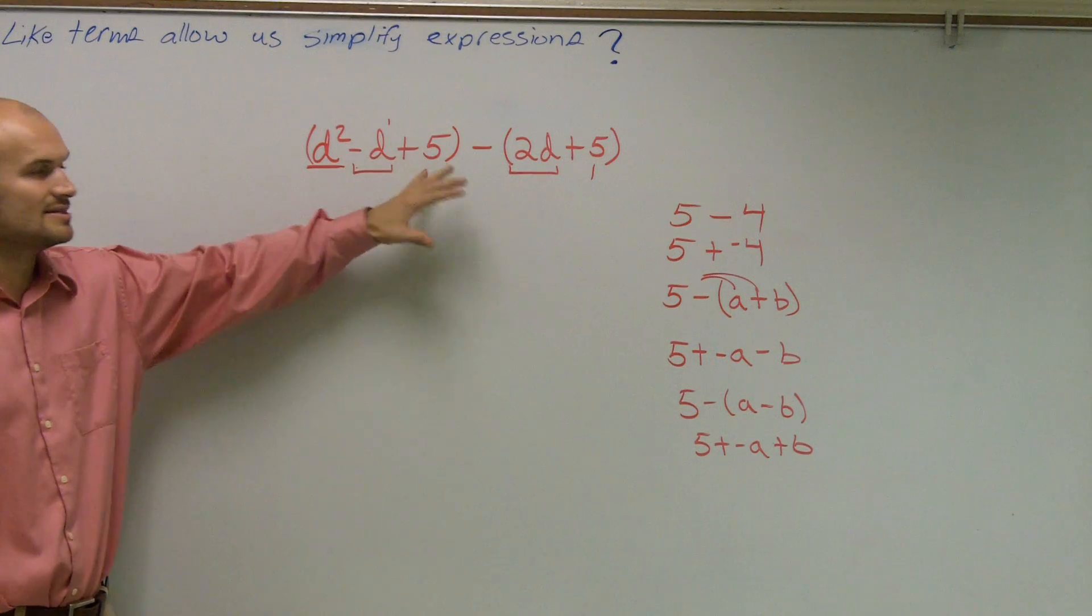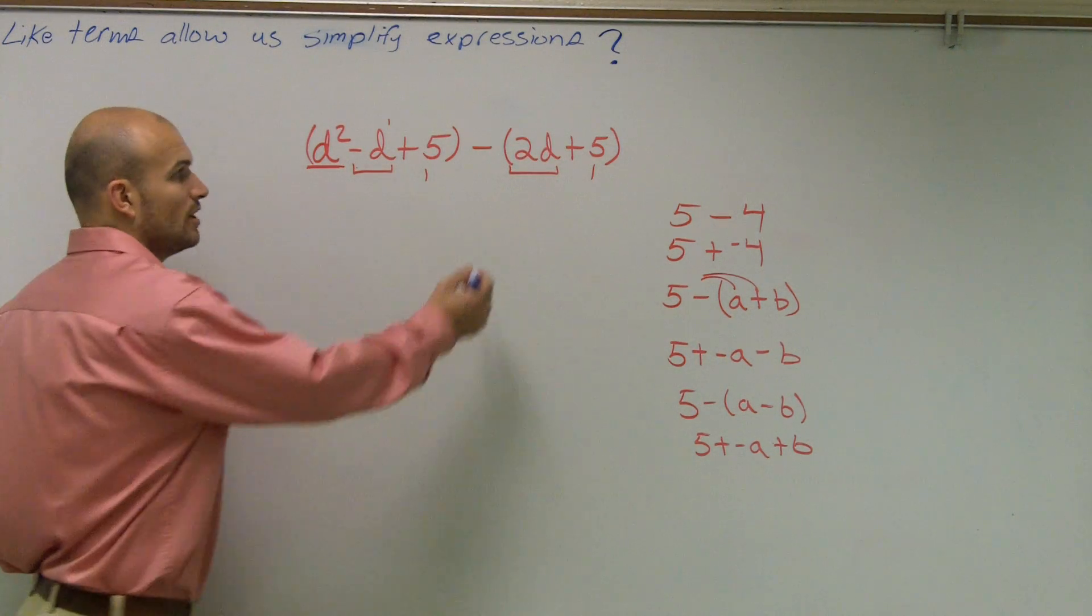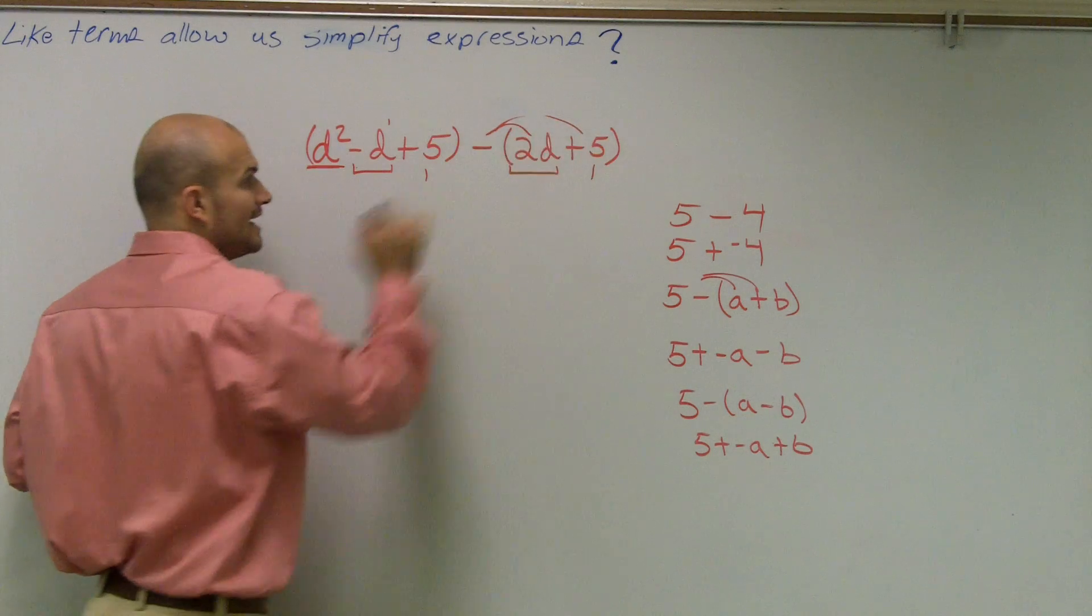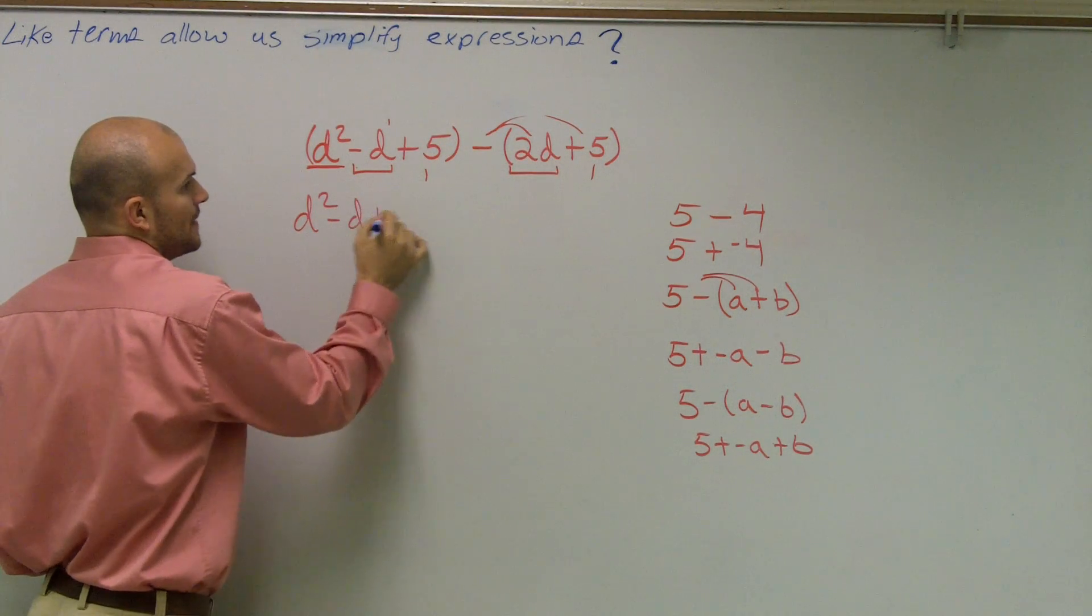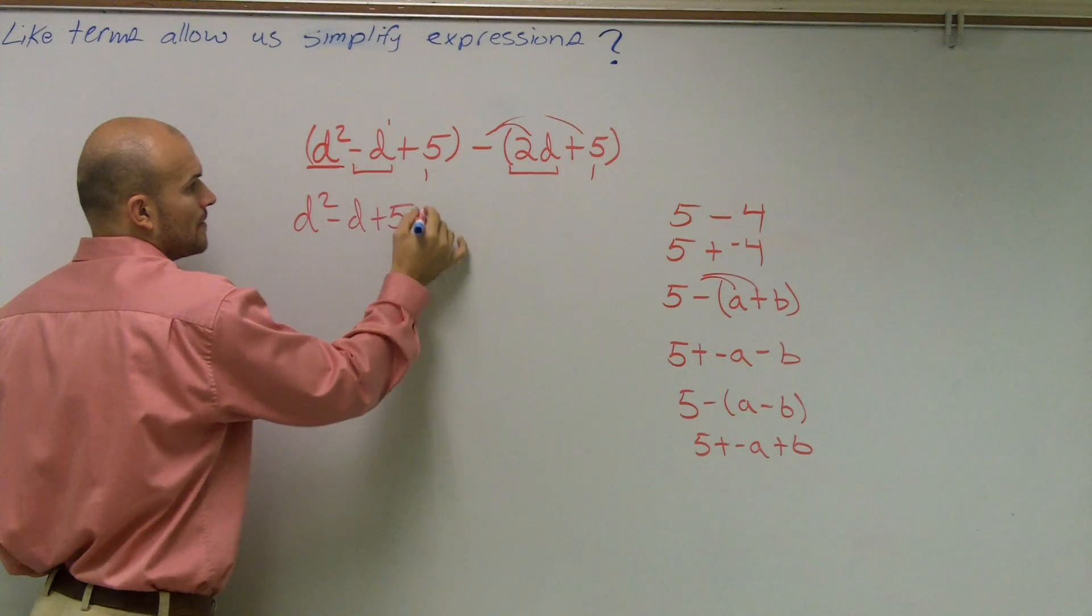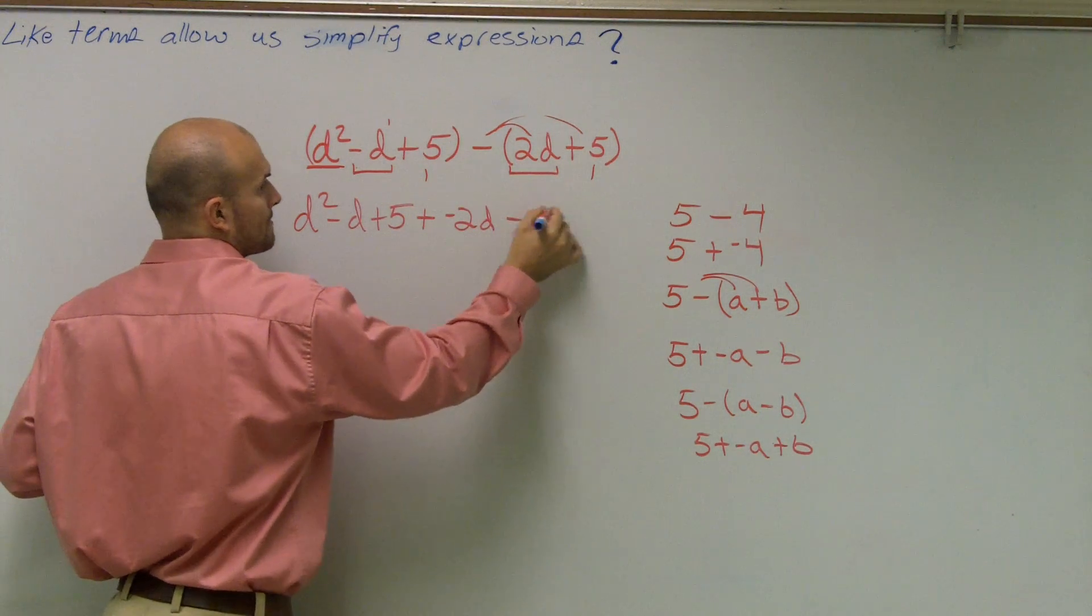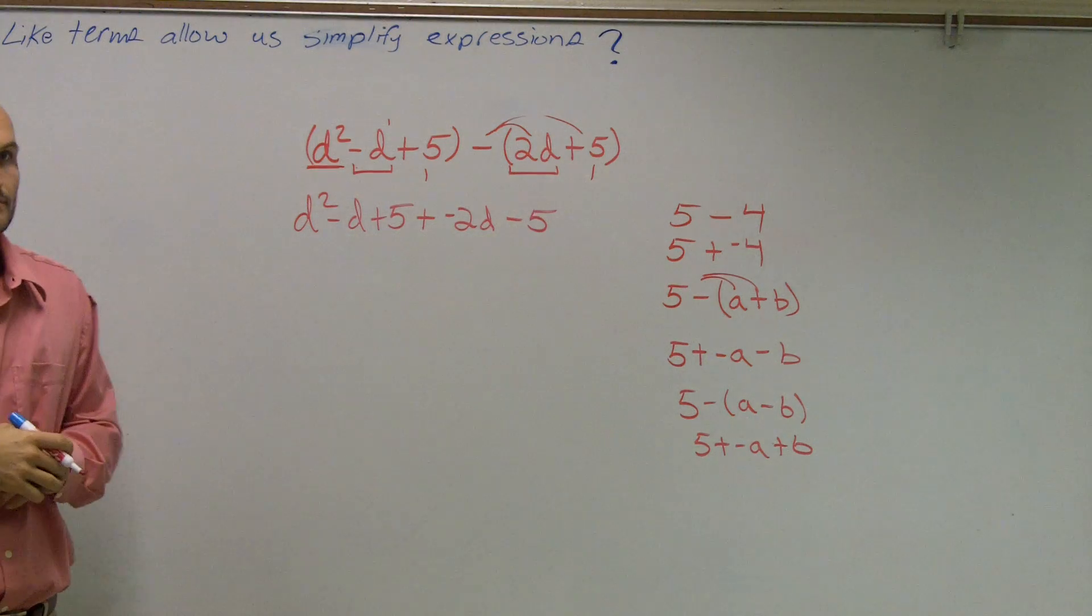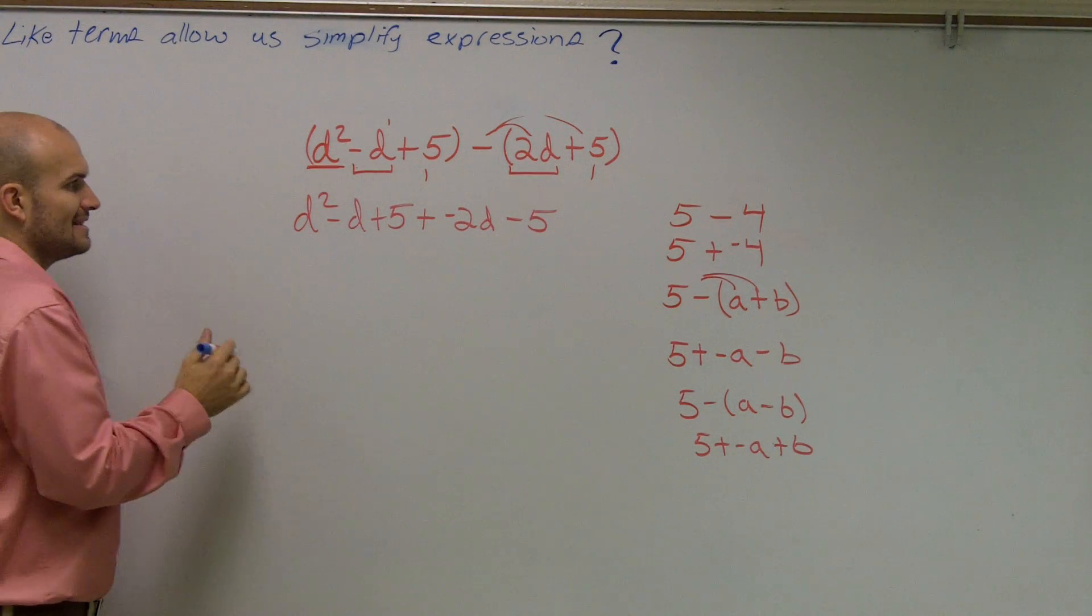So all I'm doing, instead of doing the subtraction problem, I would like to convert this to an addition problem. So what I'll do is I'll distribute the negative sign. So I get d squared minus d plus 5 plus negative 2d minus 5. All right?